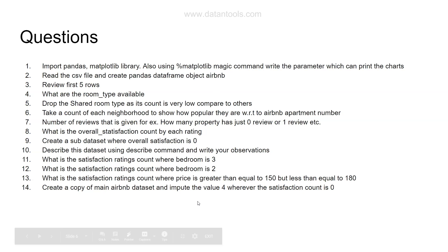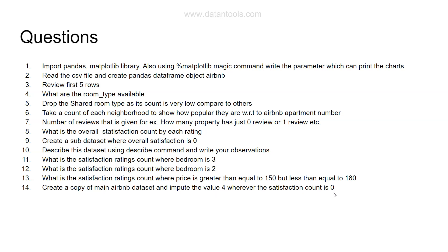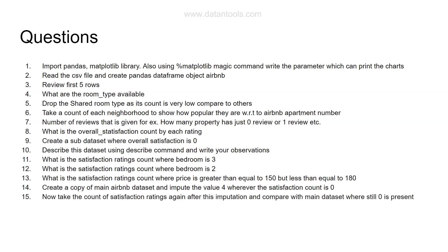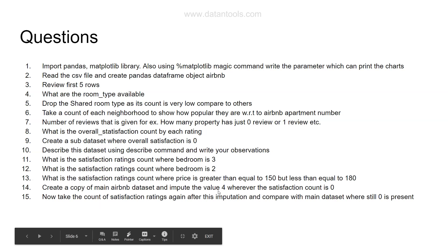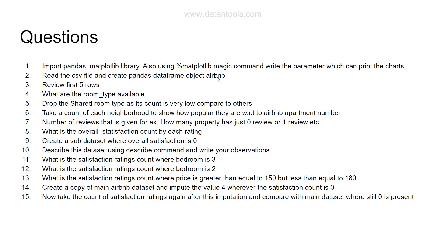Question thirteen: create a copy of the main airbnb dataset and impute the value 4 wherever the satisfaction count is zero. Based on the earlier analysis, the most frequent rating given to apartments is 4, so we assume that is what the zero-satisfaction rows should be. Question fourteen: after this imputation, take the count of satisfaction ratings again from the copy dataset and compare it with the main dataset.